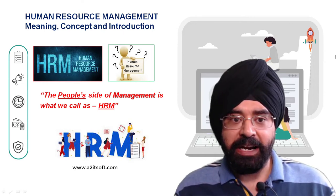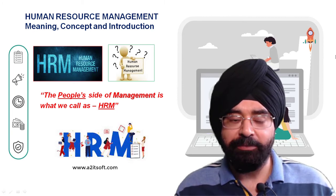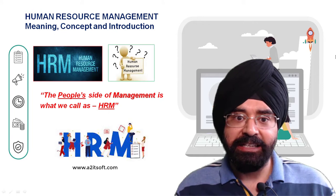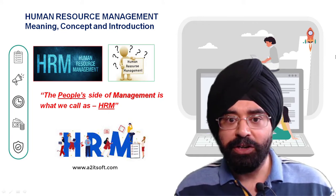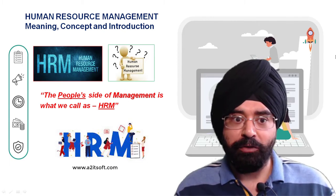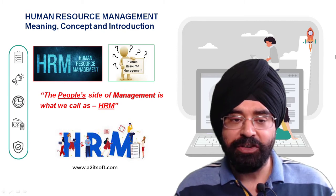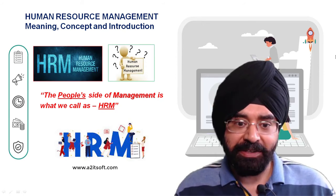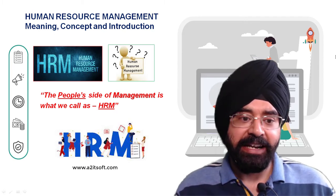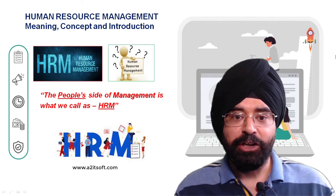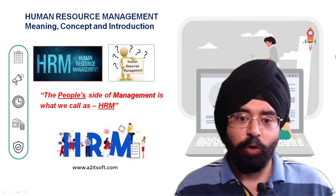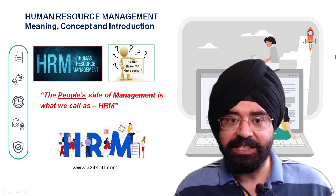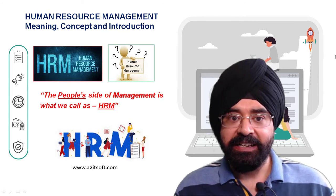Human resource management is one domain in the field of management that deals with human resources. This is the only subdomain in management that deals with living resources. As per economics, there are four factors of production, out of which labor is one — and labor is what we call human resources. The people side of management is what we call human resource management. Human means the staff involved with the company; resource means they are one of the inputs to organizational productivity and efficiency; and management means the sum of all activities being carried out.